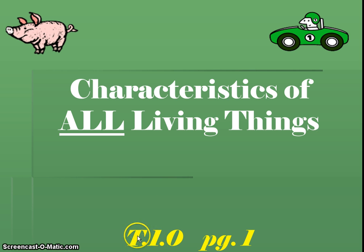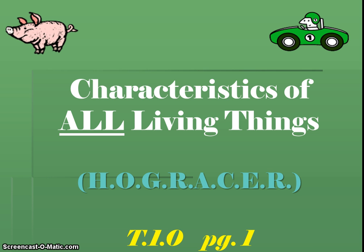You would want to title the notes the following way. This T stands for topic. The next number is what theme we're in and then the subtopic we're in. And this is page one. When we're doing these notes you're going to want to listen for things that I say out loud, but also write down things you see on the screen as organized as you can — underlining things, starring things. And we're going to use an acronym, which many of you probably have heard of. An acronym helps you remember a list of things. The characteristics of life are a list. There are eight characteristics, and this term HOG RACER — each letter stands for a characteristic of life.